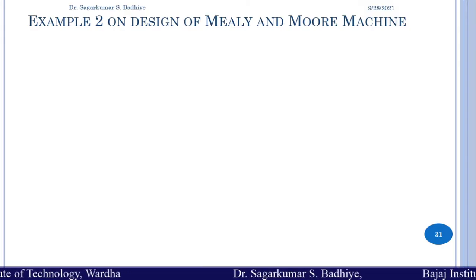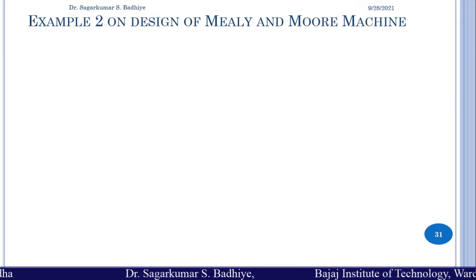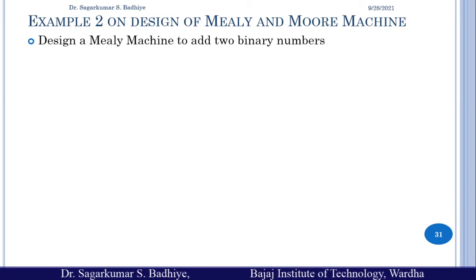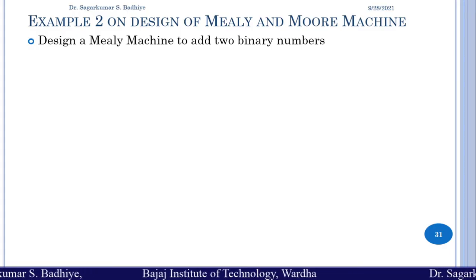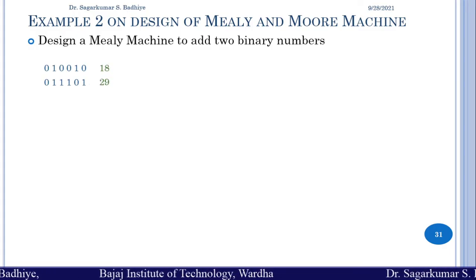Today we are going to look at another example on design of Moore and Mealy machines. The first example today will be on the design of a Mealy machine for adding two binary numbers. Let us consider adding binary 18 with binary 29.